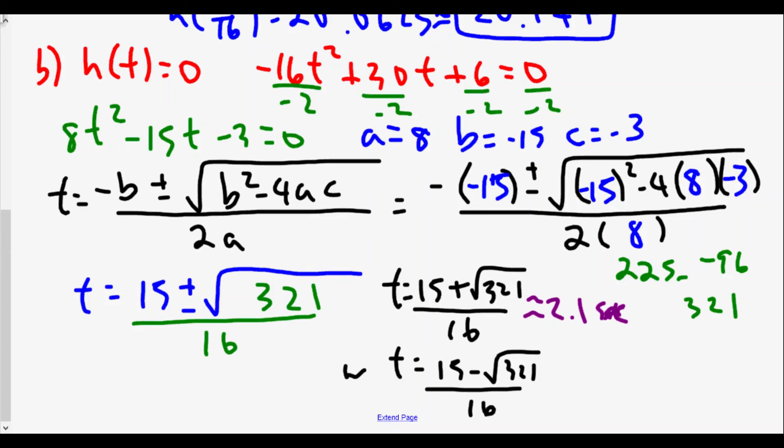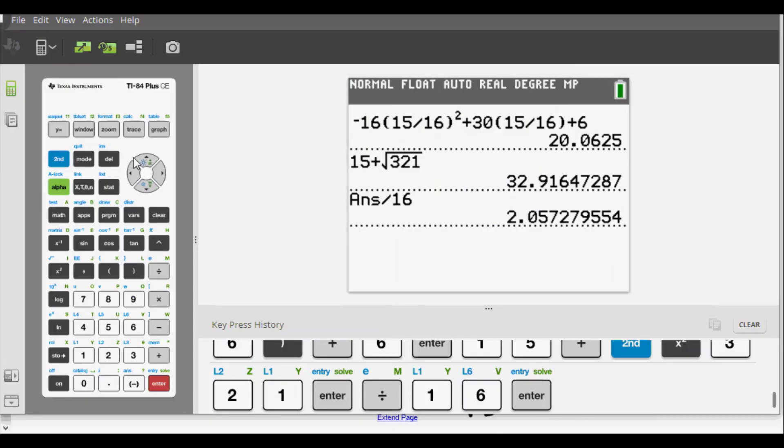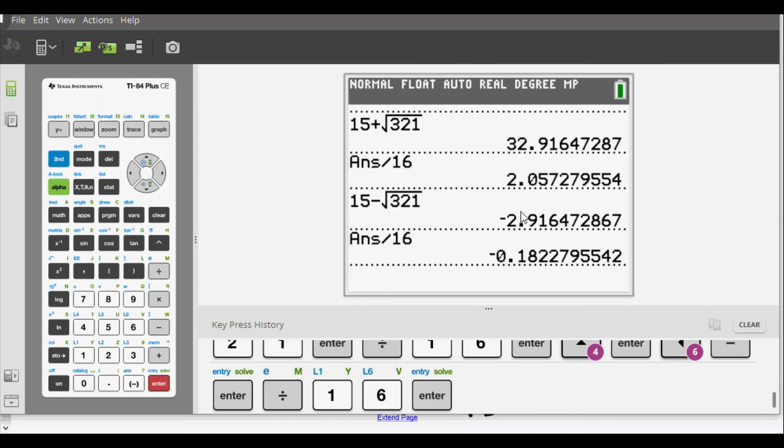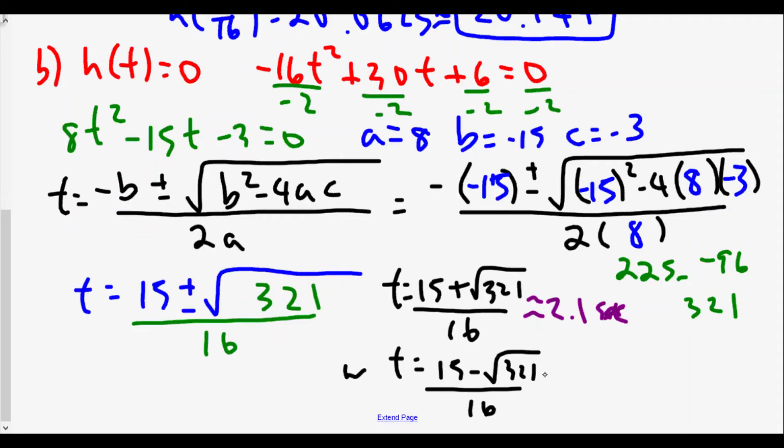Now we're going to find the second time by doing 15 minus. I'm going to grab this here and change to minus, enter, and then divide by 16. Notice we have -0.18, so to the nearest tenth is -0.2 seconds. But since we can't go back in time, we only want this positive time. For Part B, we say about 2.1 seconds.